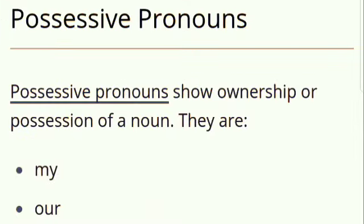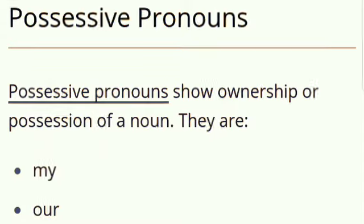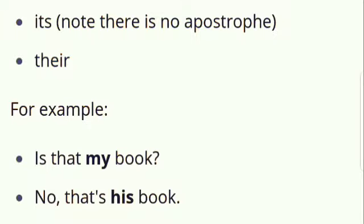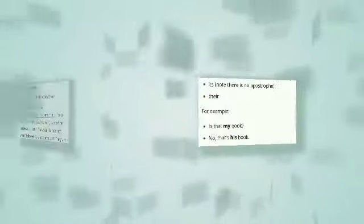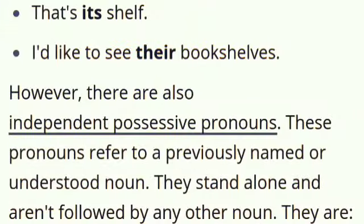Possessive pronouns show ownership or possession of a noun. They are my, our, its — remember, there's no apostrophe — and their. For example: is that my book? No, that's his book. That's its. I would like to see their bookshelves.